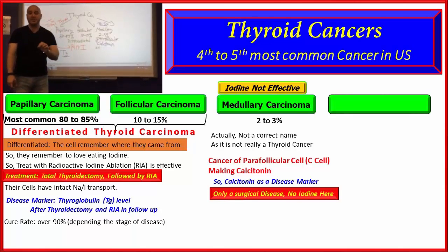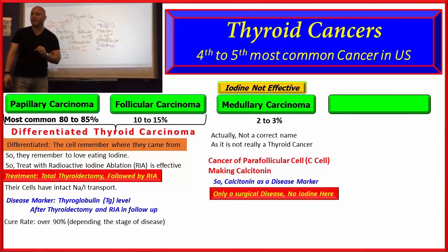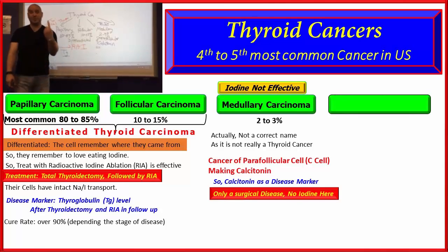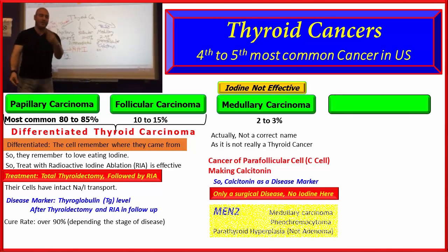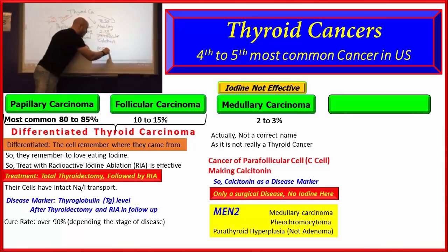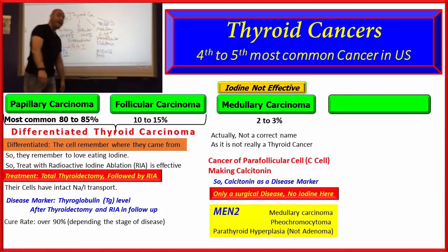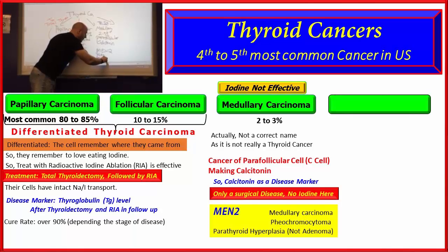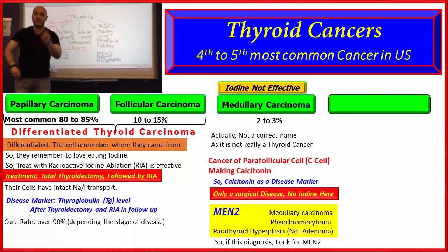Another very important point about medullary carcinoma: if you have a pathologic diagnosis of medullary carcinoma, you must rule out MEN2. MEN2 consists of medullary carcinoma, pheochromocytoma, and parathyroid hyperplasia — not adenoma, but hyperplasia. So if you have medullary carcinoma diagnosed, you must look for MEN2.